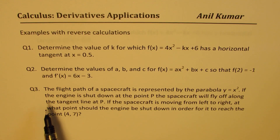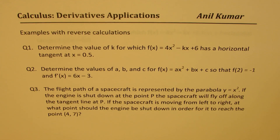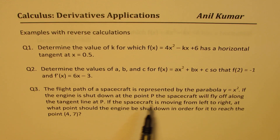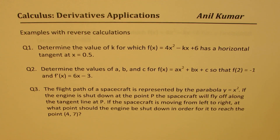Question number three is extremely important. It says: the flight path of a spacecraft is represented by the parabola y equals x squared. If the engine is shut down at point P, the spacecraft will fly off along the tangent line at P. If the spacecraft is moving from left to right, at what point should the engine be shut down in order for it to reach the point (4, 7)? All these questions are from previous test papers, so I think they should be watched very carefully.